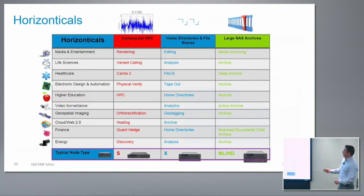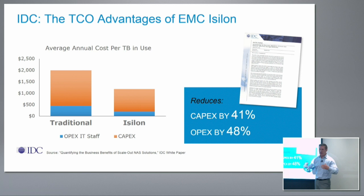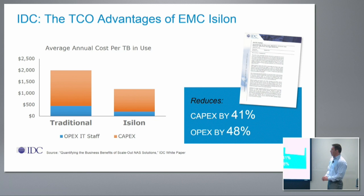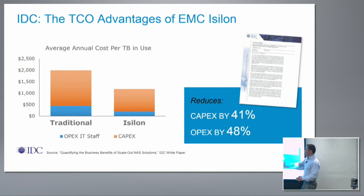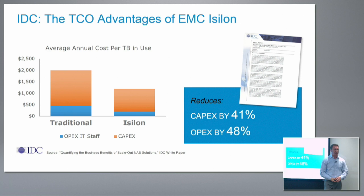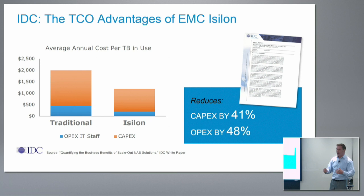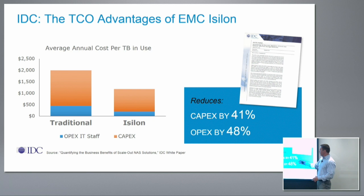From a TCO perspective, the ability to consolidate all of those filer environments into a single filer eliminates white space and islands of storage, allowing you to share resources — whether performance or capacity — across the node. When you manage it, you're managing the cluster as a single infrastructure as opposed to 10, 20, or 30 filers. We have an IDC report that shows the Isilon single-global-namespace approach to consolidating things into a single cluster can reduce CapEx by 41% and OpEx by 48%.